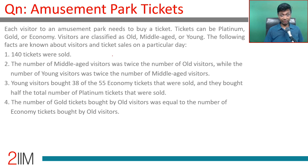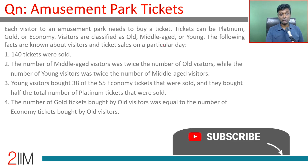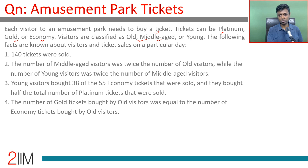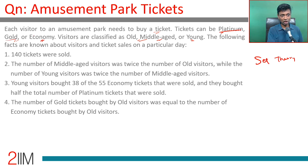Amusement park tickets - make sure you have tried this set before you look at the solution. Each visitor to an amusement park needs to buy a ticket. Tickets can be platinum, gold, or economy. Visitors are classified as old, middle-aged, or young. These are classifications that do not overlap - platinum, gold, or economy won't overlap, and neither will old, middle-aged, or young.